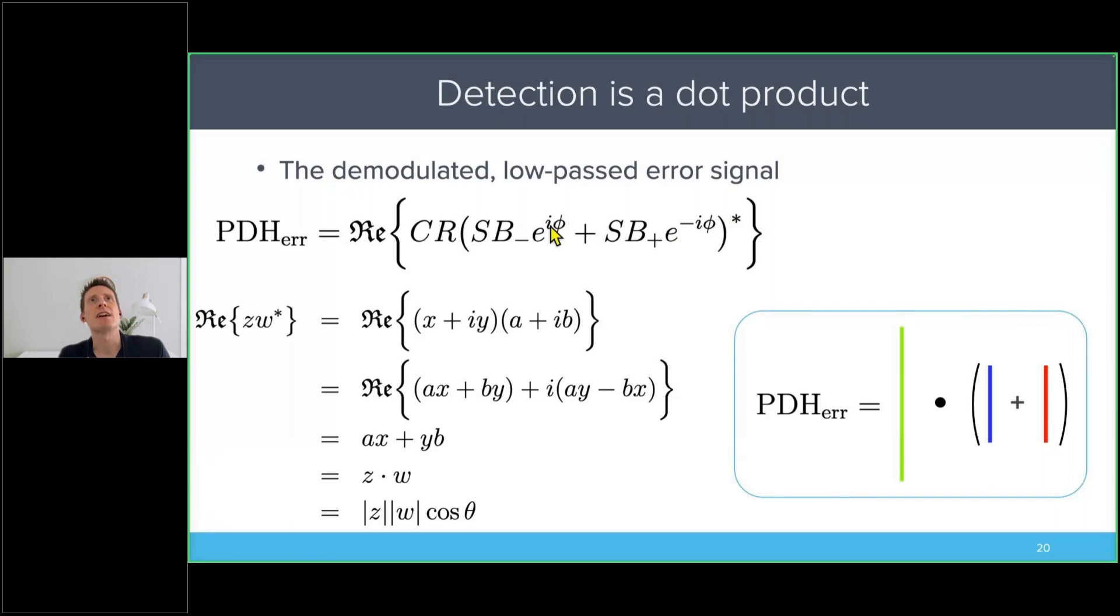You'll also see we have phase terms, and this is the demodulation phase. So you can see how the demodulation phase rotates the sidebands. And this is not particularly easy to digest, so what we can do is look at this expression here.